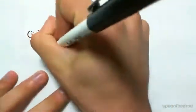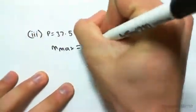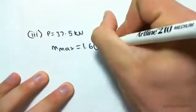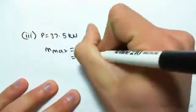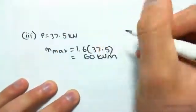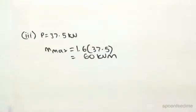So we're going to find Mmax equals 1.6P. In our case, P is 37.5 kilonewtons, which means our maximum moment will be 60 kilonewton meters.